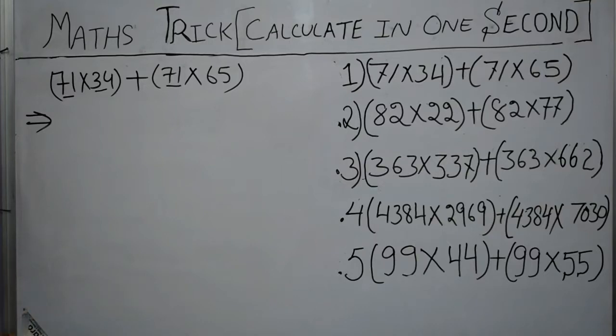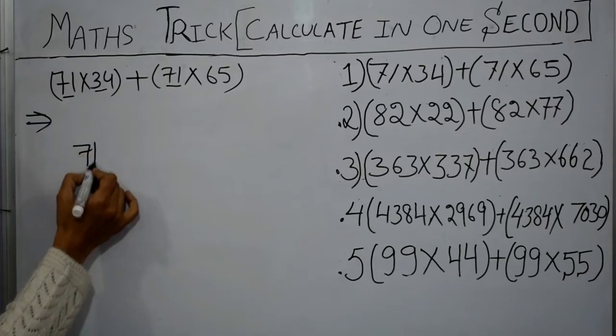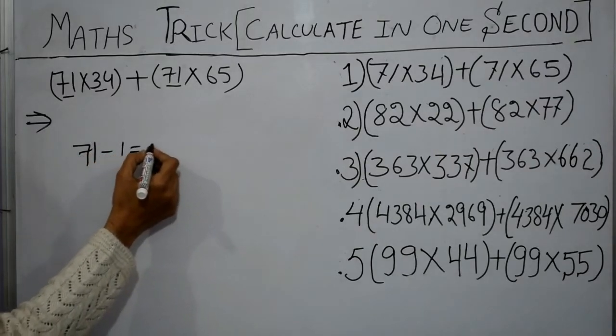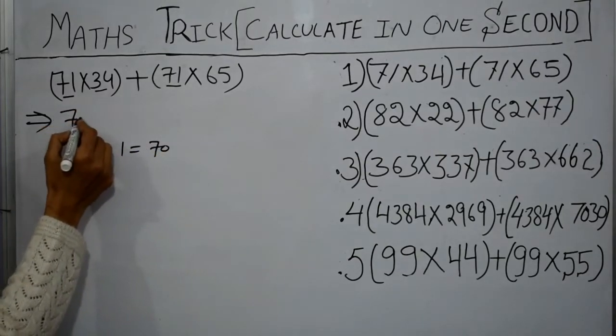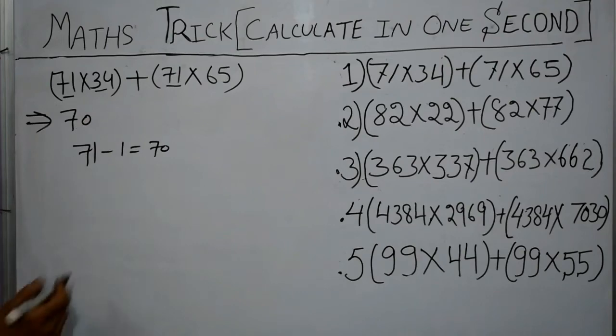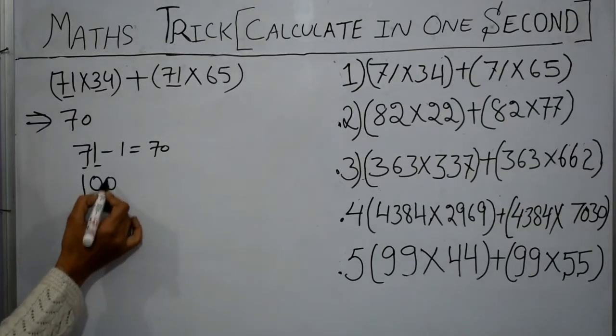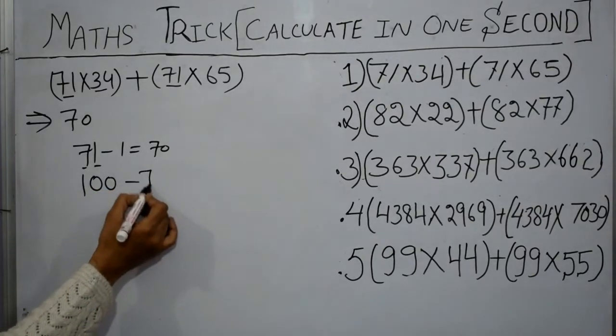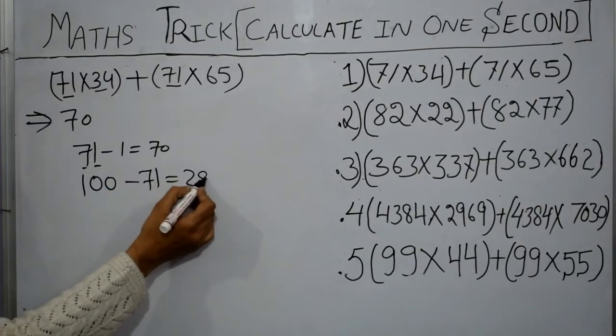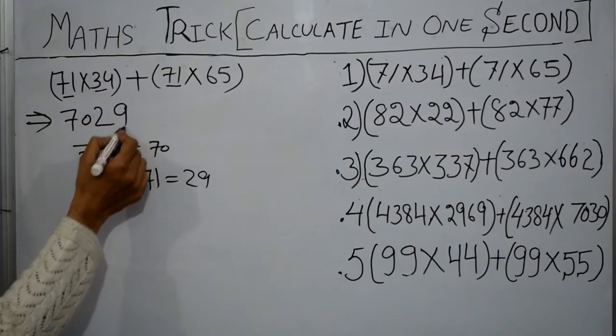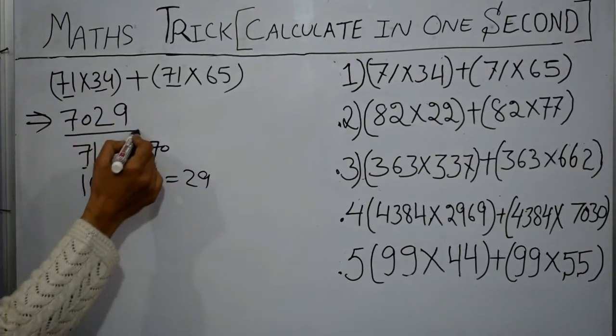What's our trick? We have to take 71 and subtract 1 from it. We got 70. Write out 70 here. Now we have two digits here so we will take 100. Subtract 71 from 100, we got 29. Write out 29 here and this is our answer.